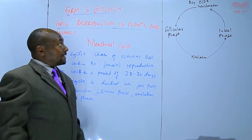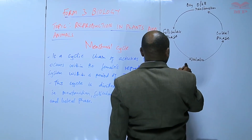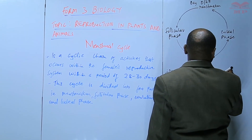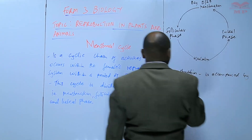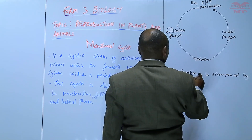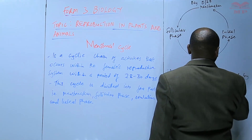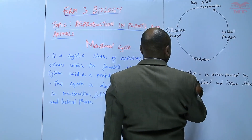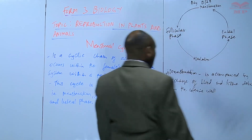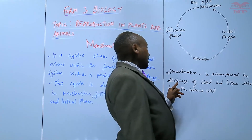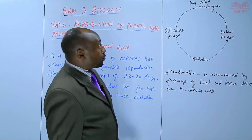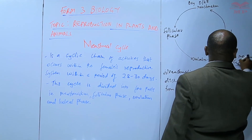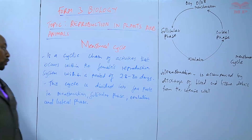Starting from menstruation: this is accompanied by discharge of blood and tissue debris from the uterine wall. Menstruation is a period where there is discharge of blood and tissue debris from the uterine wall, and that is at the beginning of the menstrual cycle.